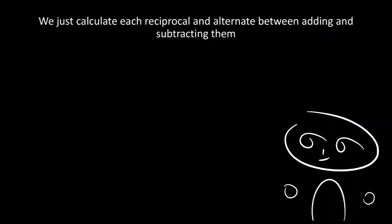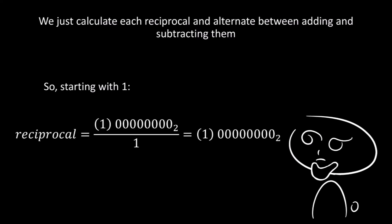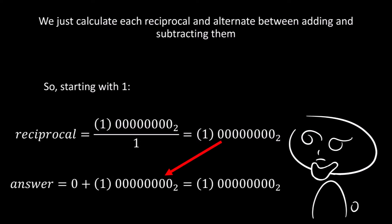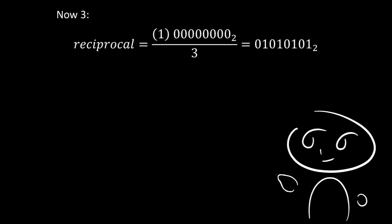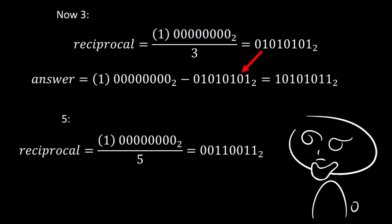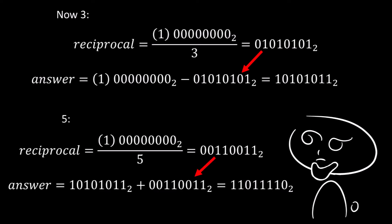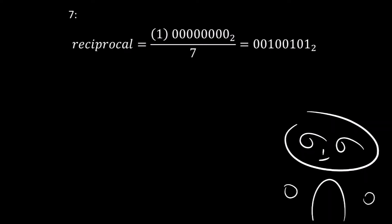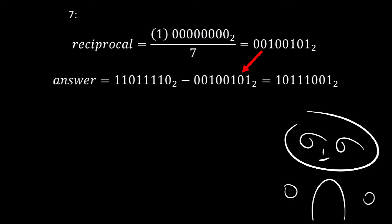We then calculate each reciprocal and alternate between adding and subtracting them. Starting with the reciprocal of 1, we divide our fixed point value of 1 by 1, giving us the fixed point value of 1, and add that to our answer which starts as 0. Next, we have the reciprocal of 3, which we subtract from the answer. Then the reciprocal of 5, which we add. After that, the reciprocal of 7, which we subtract from the answer.